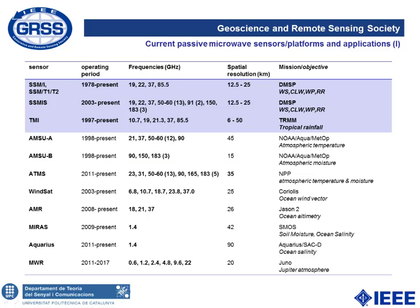Here is a table of current passive microwave sensors. I'll focus first on the SSMI family, which is devoted to measuring wind speed, cloud liquid water, water vapor and rain rate. The first SSMI was launched in 1978, with following versions T1, T2, and the final SSMIS launched in 2003. There are many SSMIs providing daily global coverage. Then there's the TMI, a specialized version of SSMI with an additional 10.7 GHz channel focused on tropical rainfall.